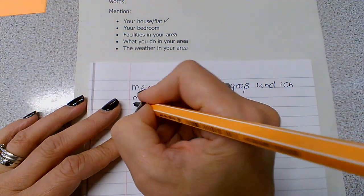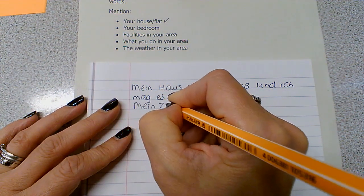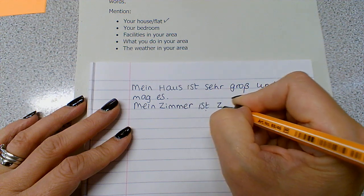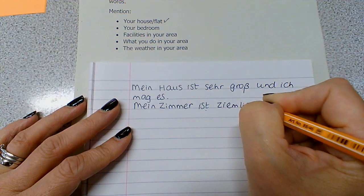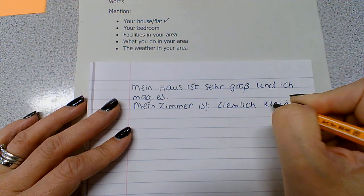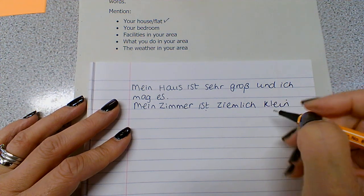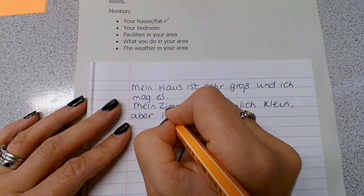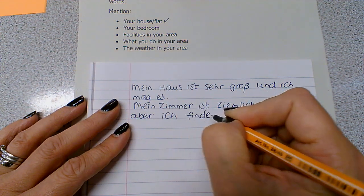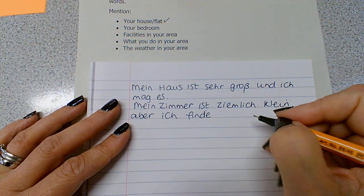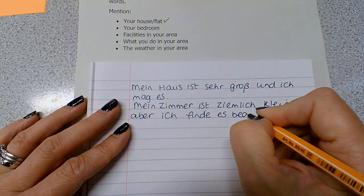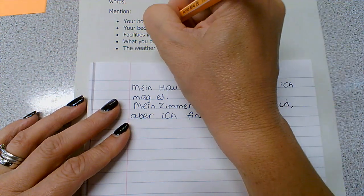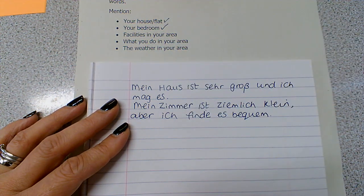Moving on to the second bullet point — your bedroom: 'Mein Zimmer ist ziemlich klein.' So my room is quite small, 'aber ich finde es bequem' — I find it comfortable. Instead of repeating 'ich mag,' I'm varying my language with 'ich finde' and using a different adjective. That's the bedroom dealt with — bullet point number two covered.